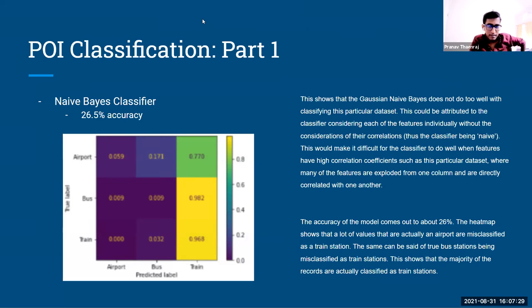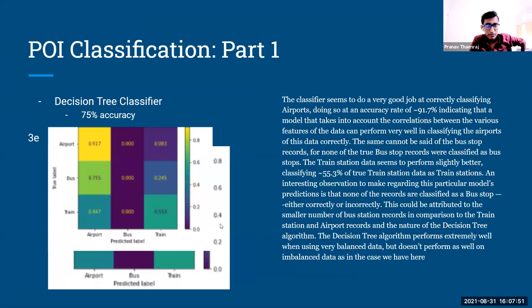And as you can see in the heat map, the classifier tended to predict almost all the items as train stations rather than anything being classified really as bus stops and airports. And as you move down to the presentation, you can see that this slightly varies. And if we look at the second part, which is the decision tree classifier, you can see that it has about a 75% accuracy. And it does, again, considerably better than the Naive Bayes because the Naive Bayes was a naive classifier. And as you can see here, the way the heat map is produced is a little bit different now.